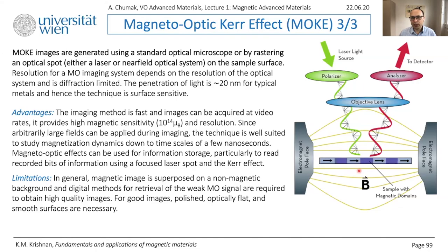Speaking about limitations, the main limitation is given by light — by the wavelength of light. It means the size of the structure that you can measure cannot be smaller than half the wavelength of the light being used, which gives about 300 nanometers resolution. Of course, this is not comparable to electron-based techniques. In this lecture we will not discuss more techniques, but you can read about them in the book by Krishnan or other good books.